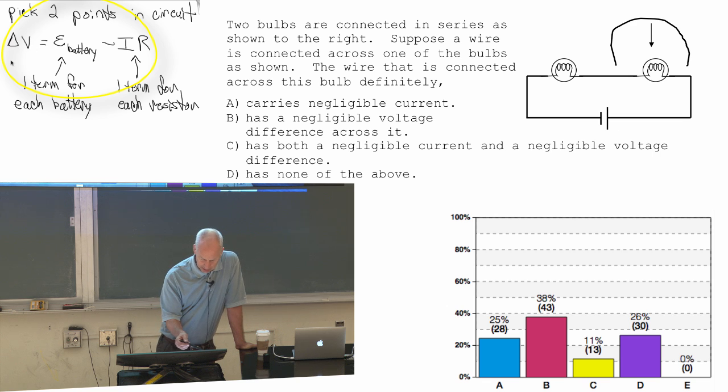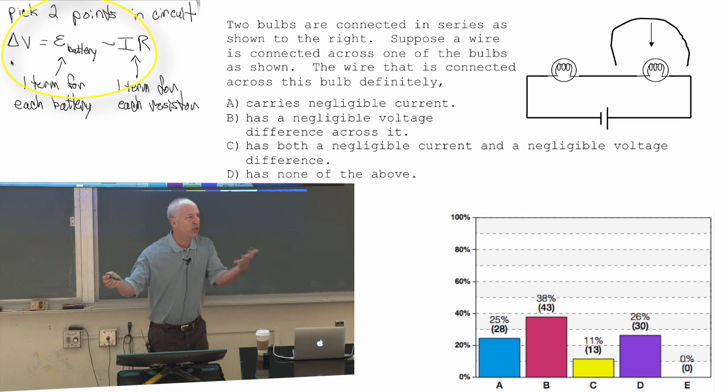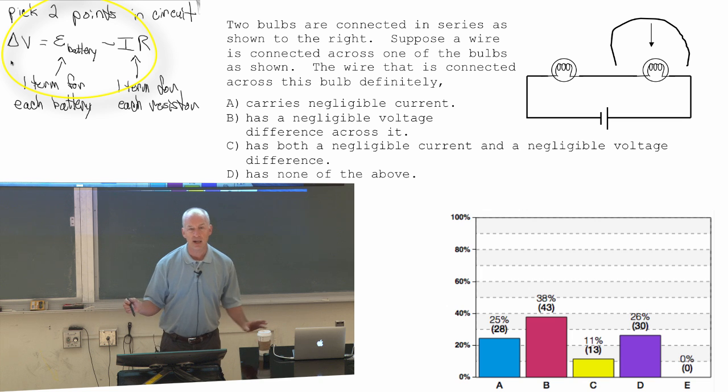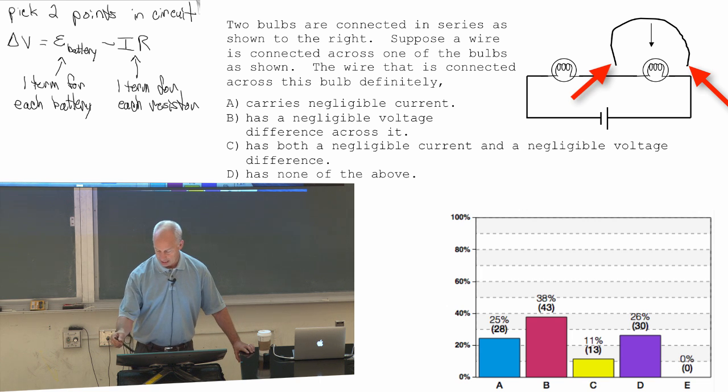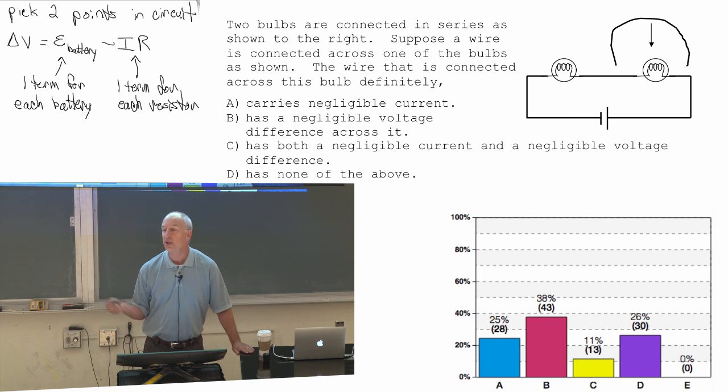If there's no resistance and no battery, then there's no voltage difference. So this is what we've been assuming the whole time is that bare wires can have negligible voltage change across them. So the voltage difference between one side and another is zero if you take the resistance to be zero. There is no voltage change.